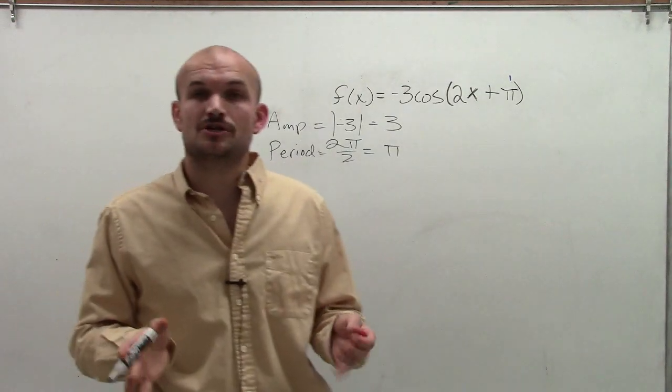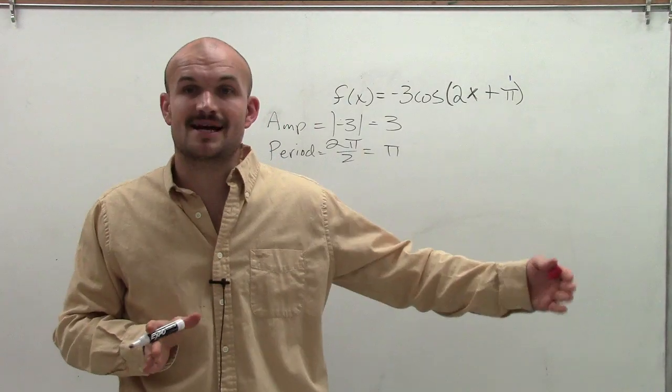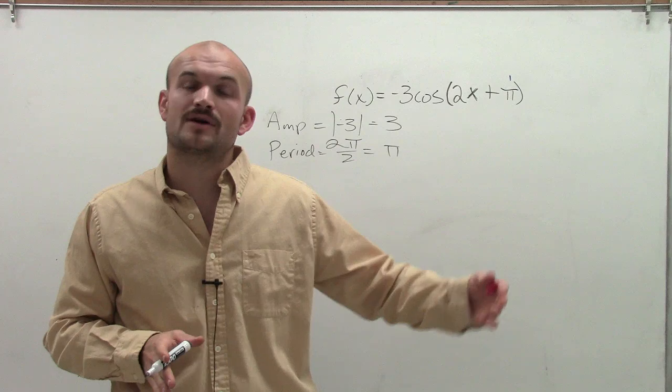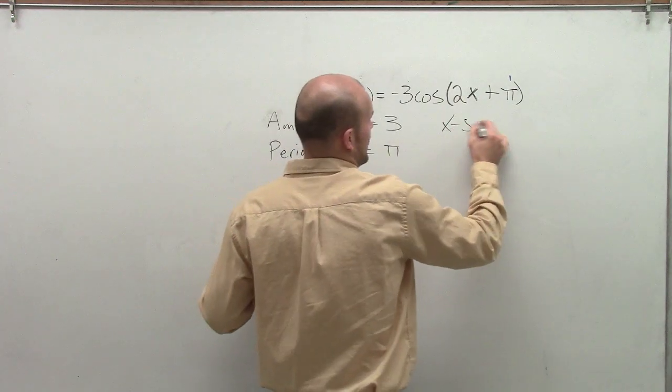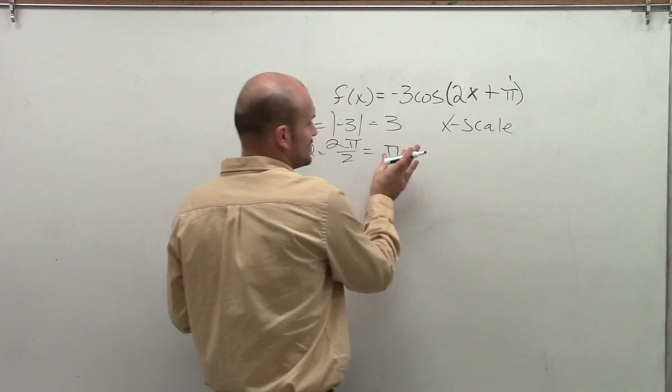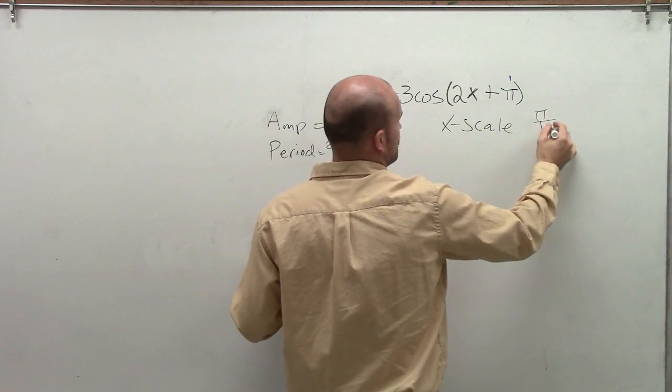The next thing we want to do is determine our x-scale. So when we create our x-axis, we want to know how far we're going to measure out our critical points. What we're going to do is take our period and divide it by 4.